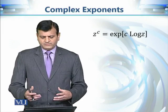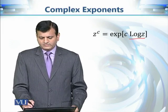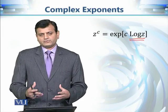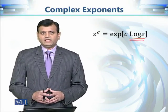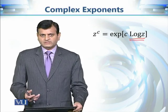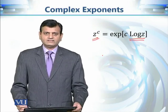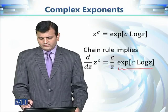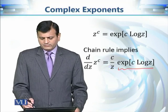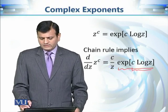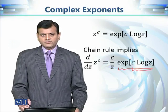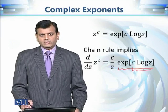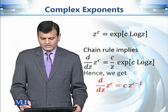By definition, z to the power c equals exponential of c times the principal log of z. We know how to differentiate the exponential function and the logarithmic function. Using the chain rule, the derivative of e to the power (c log z) equals e to the power (c log z) times the derivative of c log z, which is c over z, since c is a constant and the derivative of log z is 1 over z.